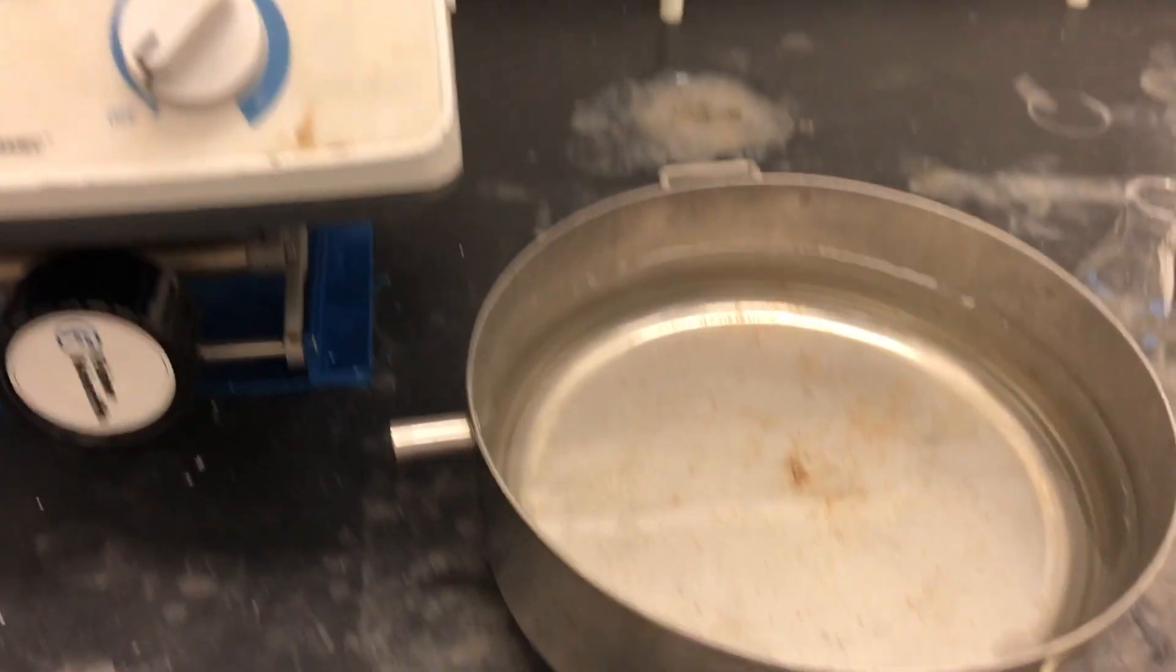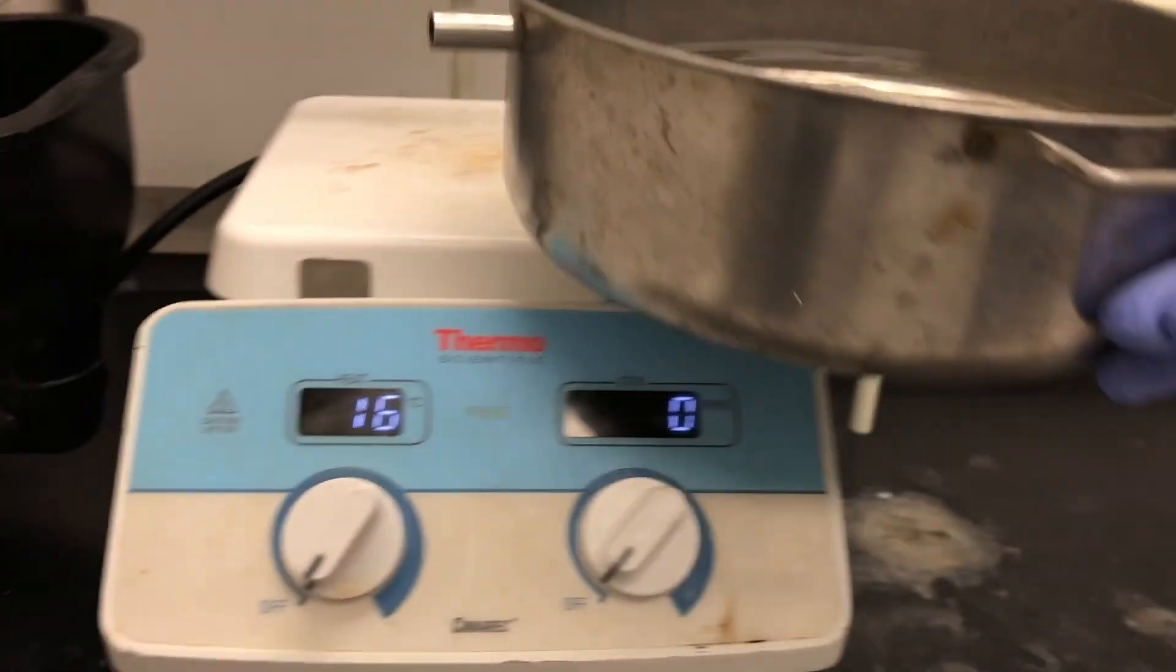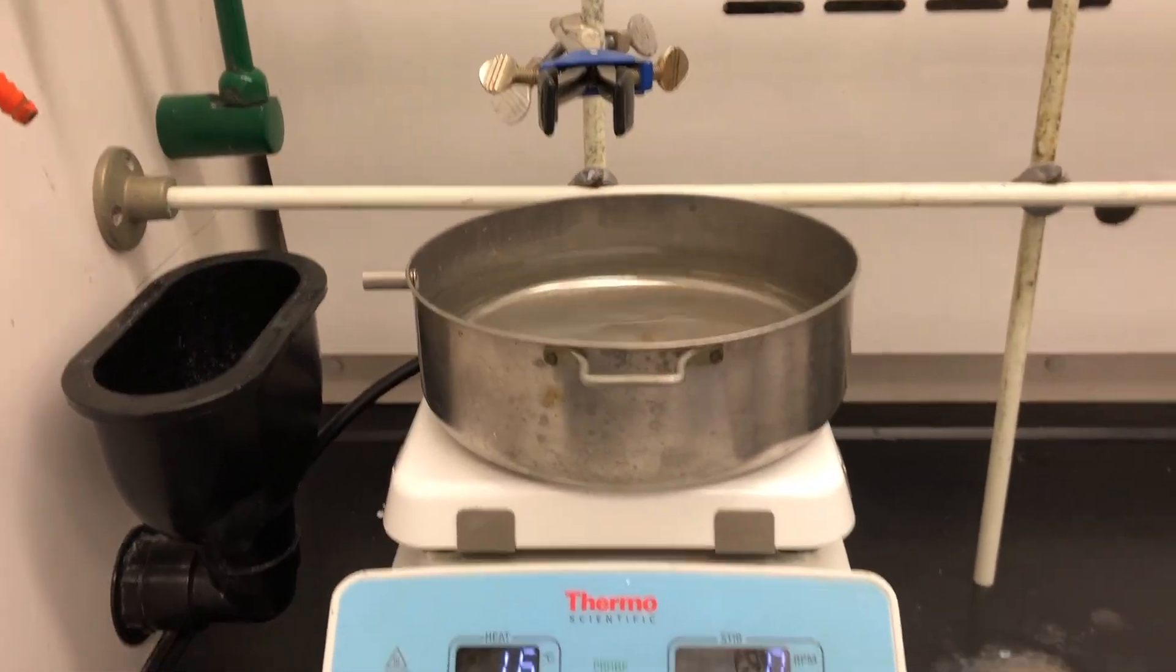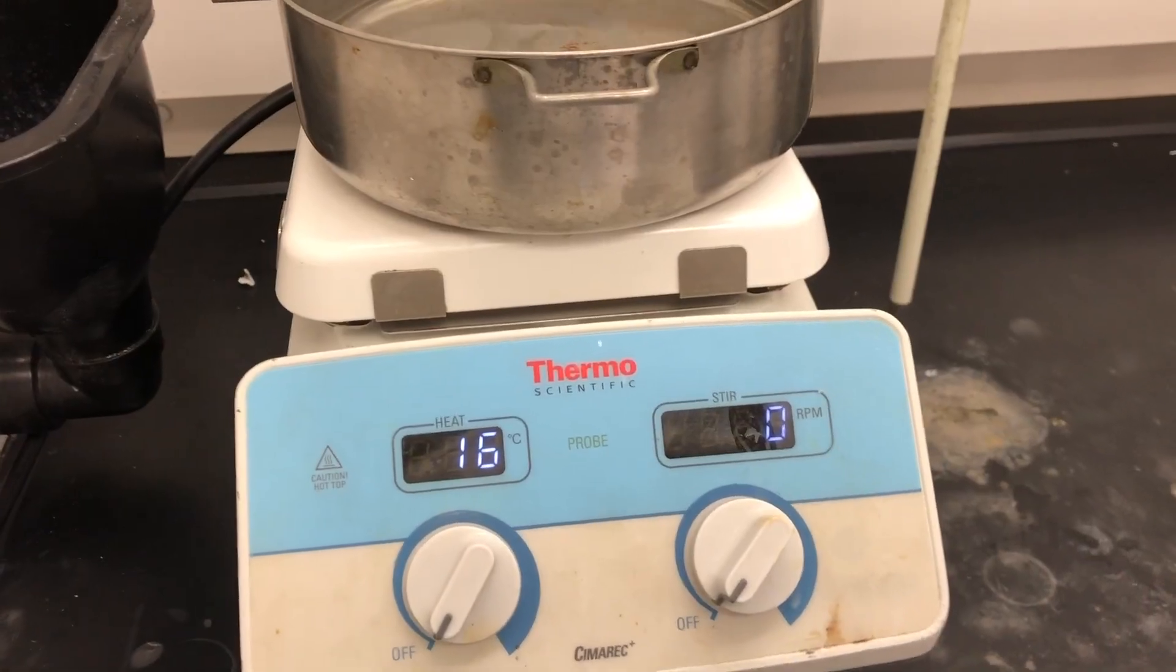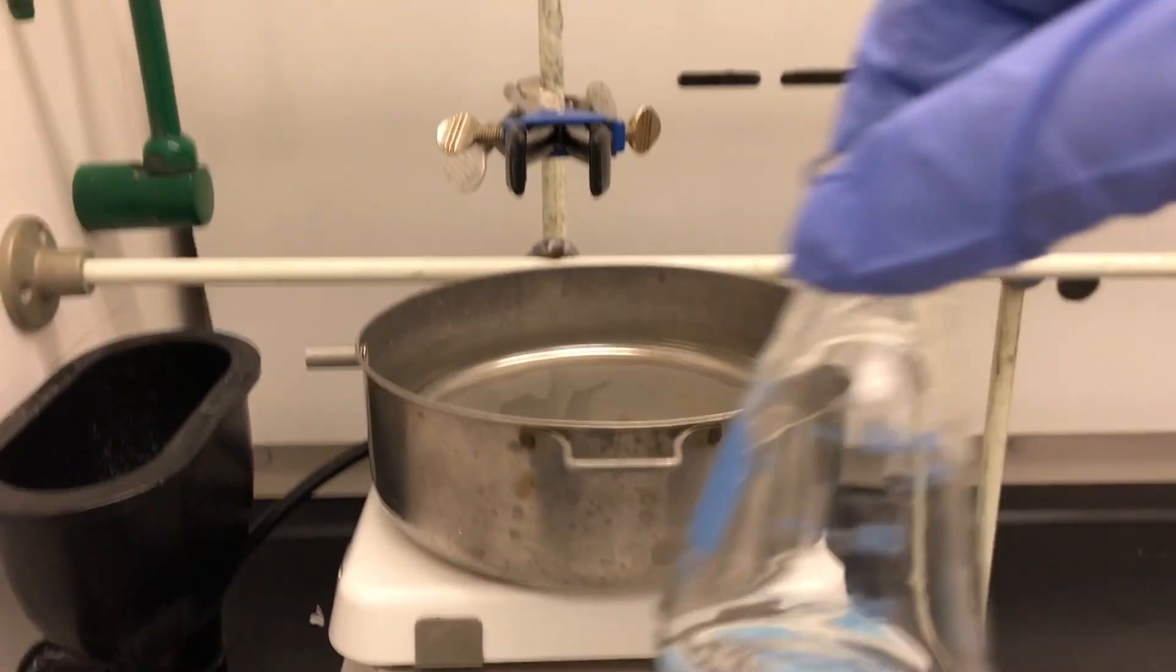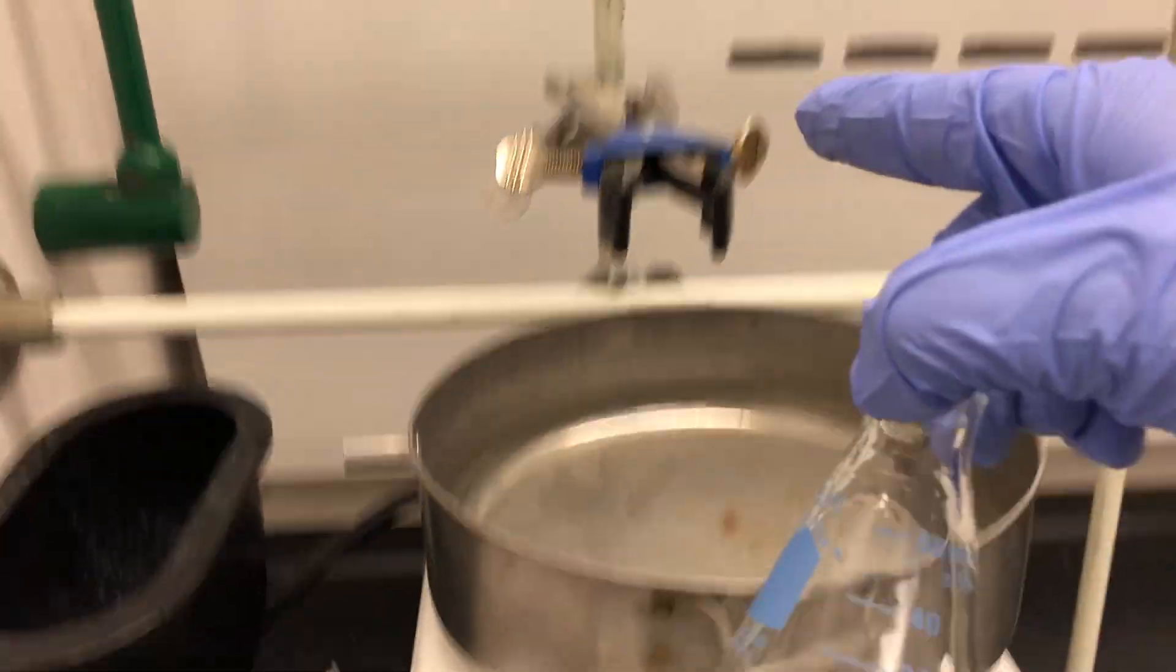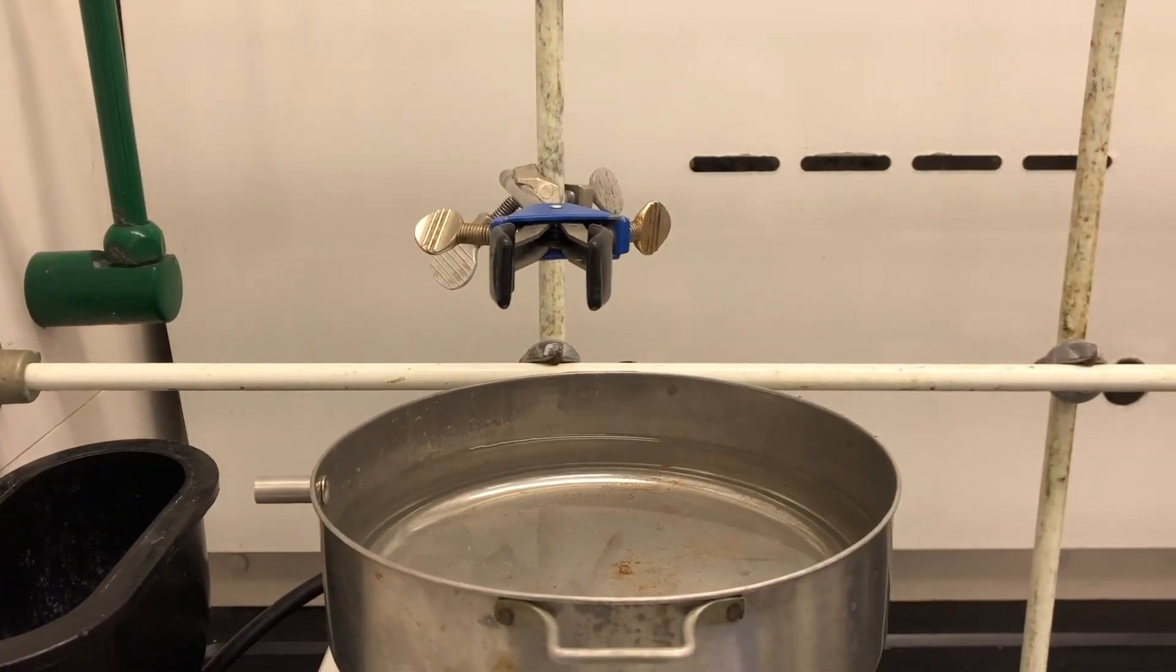We're going to fill the stainless steel bowl with water and heat the water to around boiling temperature. We'll gently stir the reaction mixture once we place it on our 50 milliliter flask. We'll clamp it right there and let it sit within the water bath.